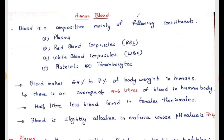Blood has four components: plasma, red blood cells, white blood cells, and blood platelets. Blood is said to be the life of the human body. Without blood, no human being can survive. Blood approximately makes six to seven percent of body weight in humans, and in an average human being we can measure five to six liters of blood. When compared to females, half a liter of blood is less when compared to males.